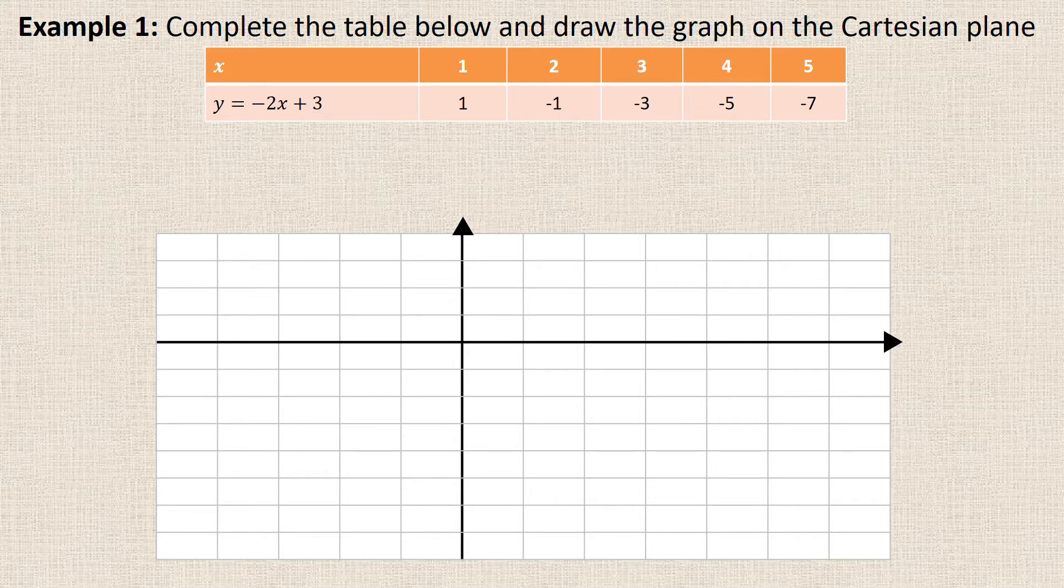If I'm given a table like this one below, what they'll usually do is they'll say complete the table and then draw the graph. In this case here I've already completed the table. If you're not sure how to complete the table then you need to go back to lesson 1. You would say negative 2 times your x value which is 1, so that's negative 2 plus 3 gives me 1.